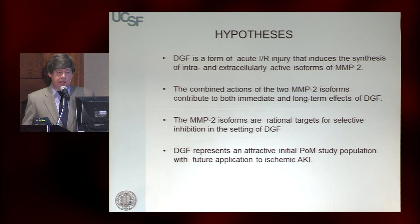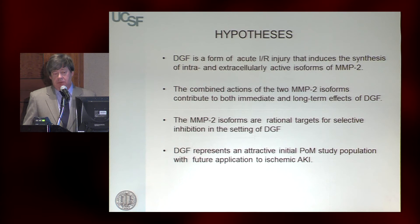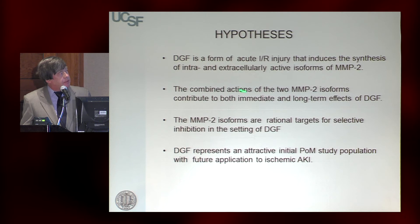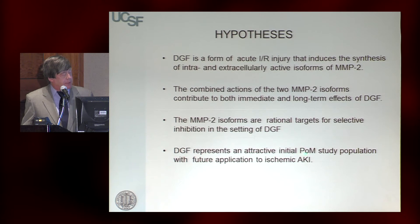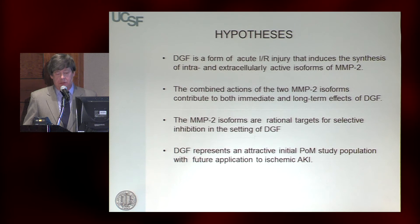We decided to look at delayed graft function as human data. Delayed graft function is an operative diagnosis: a person gets a transplant and requires hemodialysis within the first week. It's the purest form of renal ischemia reperfusion injury because you know the exact moment of injury — when they connected the kidney to the recipient circulation. We hypothesized that MMP2 isoforms would be involved in delayed graft function and are rational targets for selective inhibition. It represents an attractive proof-of-mechanism study population and a cleaner population for an initial clinical trial.